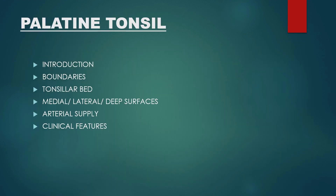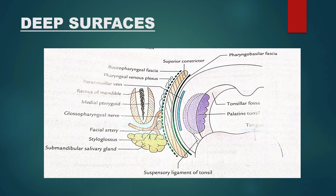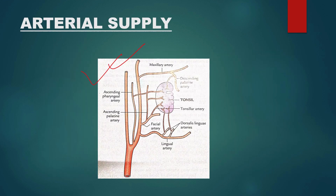Next, we have the palatine tonsil. The most frequently asked part is the palatine tonsil, where the topics to include in your answer are the introductory part, boundaries, the tonsillar bed, medial, lateral and deep surfaces, its arterial supply, and lastly the clinical features. Short notes can arise from the clinical features, so those are important topics. The diagrams — medial and lateral surfaces, deep surfaces, and arterial supply — can all be found in Vishram Singh.